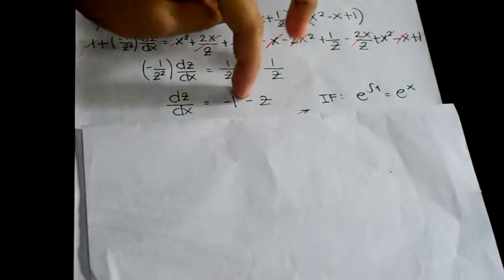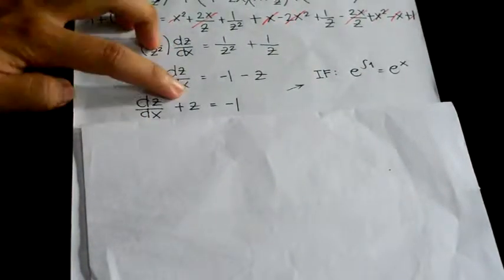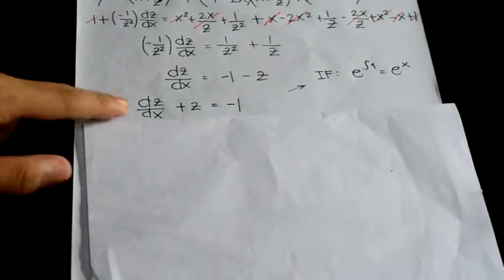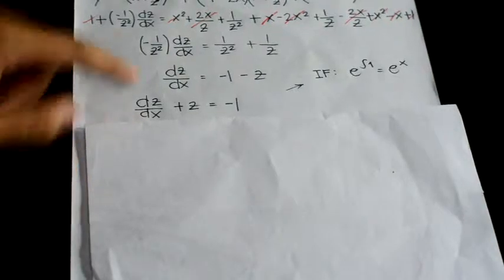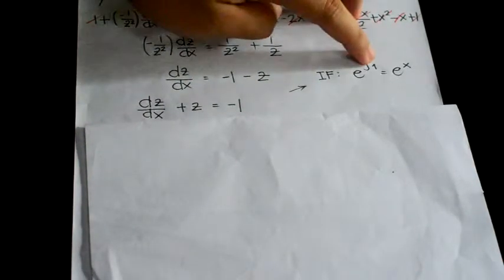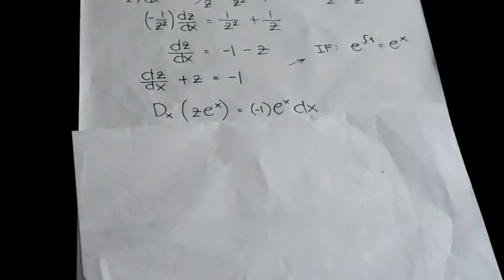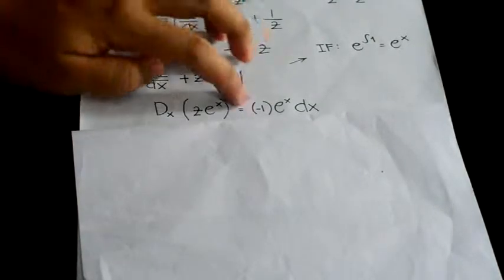Transfer the negative z to the left side of the equation and you will get dz over dx plus z is equal to negative 1.